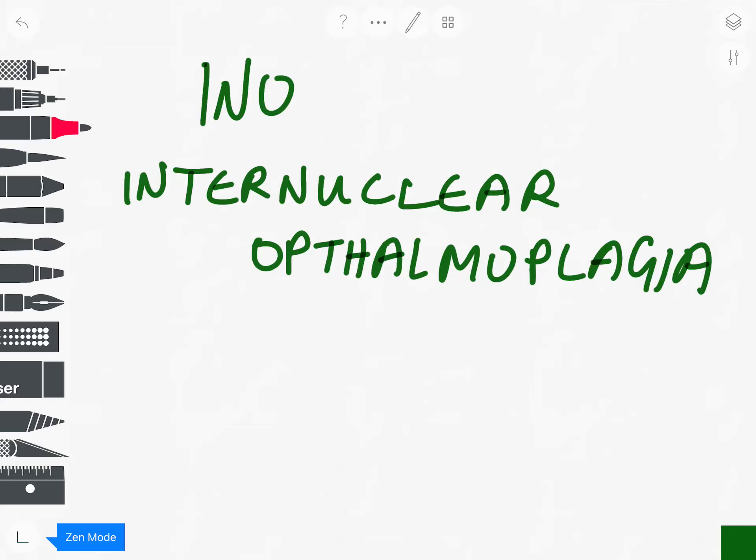Hey there, today I shall be discussing internuclear ophthalmoplegia, also known as INO. Now, when do you classically see INO? This condition is seen in MS or multiple sclerosis, and that's a demyelinating condition which is autoimmune as well. So your own body starts demyelinating your nerve fibers.